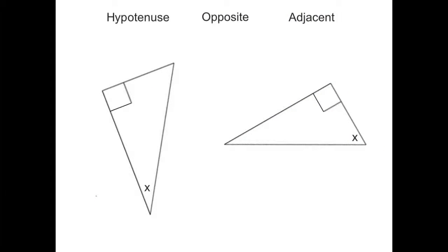So when we have a right-angled triangle, we want to label the three sides of the triangle in relation to a given angle. And in this first triangle here, you'll notice we're given angle x here. It's the one that we're taking our reference from.